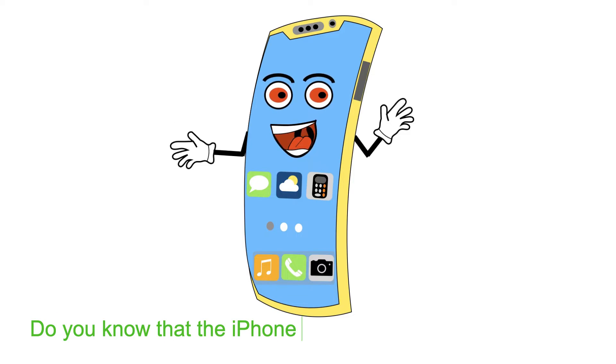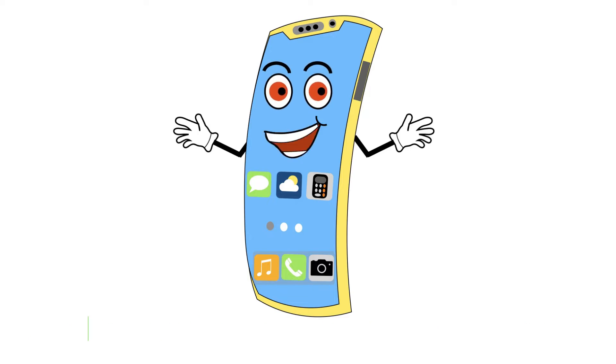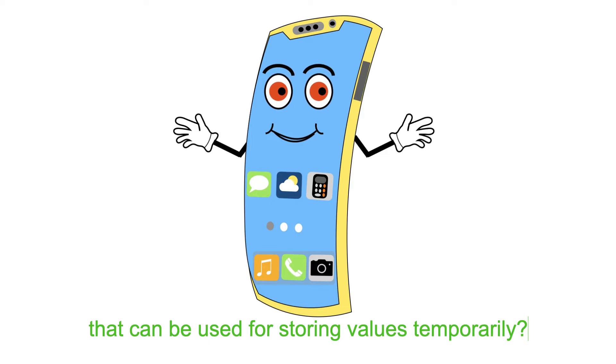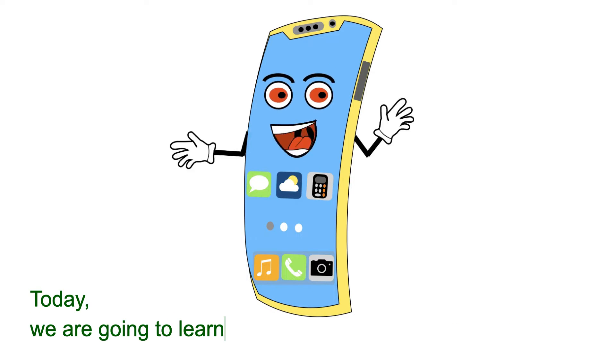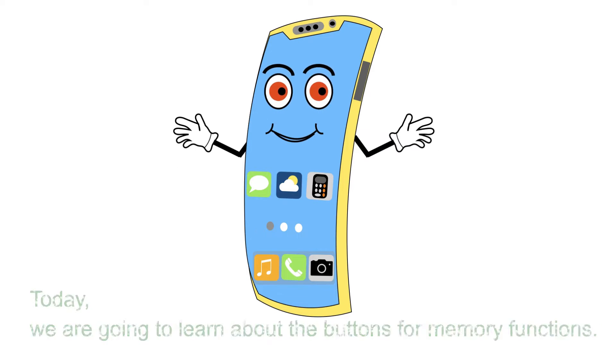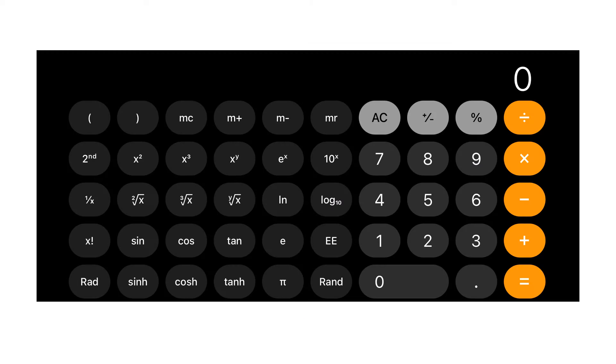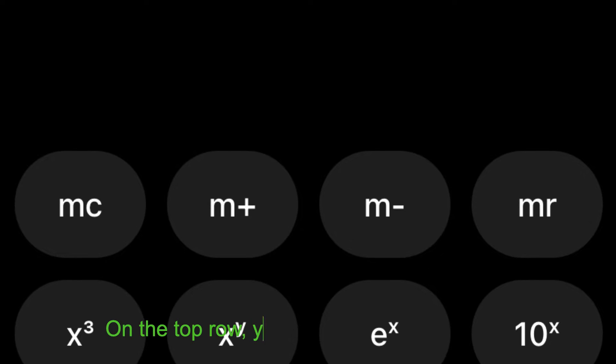Do you know that the iPhone calculator has one memory that can be used for storing values temporarily? Today, we are going to learn about the buttons for memory functions. On the top row, you will see MC, M plus, M minus, and MR.